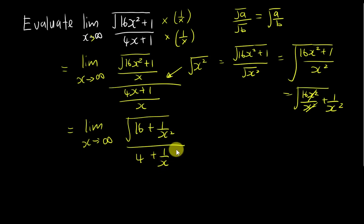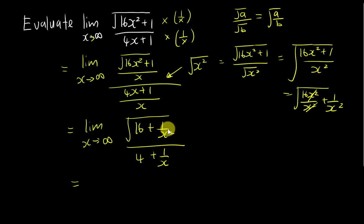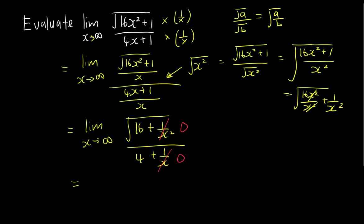Now I apply x approaching infinity. 1 divided by an extremely big number squared is definitely 0 — you can try on your calculator: 1 divided by 99999999 gives very close to 0. So those terms become 0, and the final answer is square root of 16 over 4, which is 4 over 4, equal to 1.